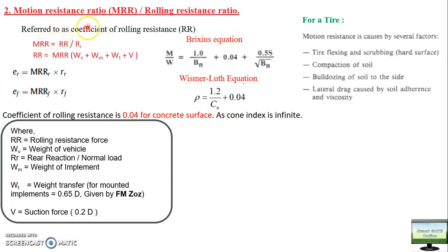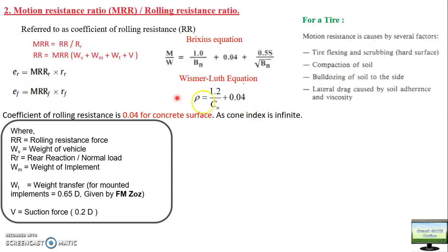Motion resistance arises from the combined effect of tire flexing, compaction of soil, bulldozing of soil due to accumulation in front of and beside the tire, lateral drag, viscosity, and the self-weight of the tractor and implement — all these factors contribute to motion resistance and rolling resistance.